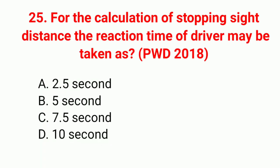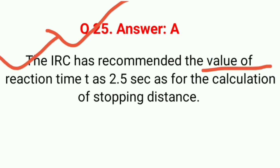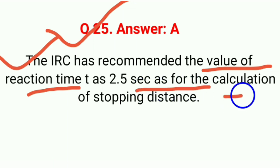Question 25: For the calculation of stopping sight distance, the reaction time of a driver may be taken as — correct answer A: 2.5 seconds. The IRC has recommended the value of reaction time T as 2.5 seconds for the calculation of stopping distance.